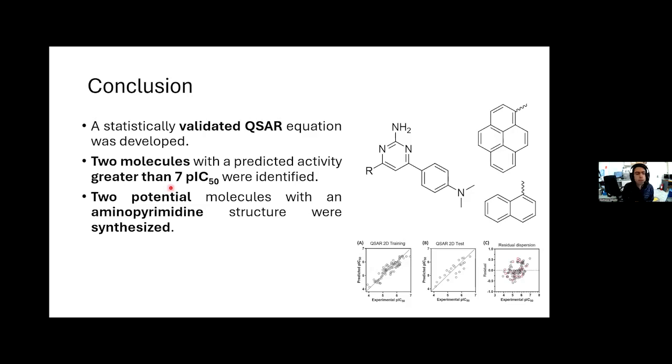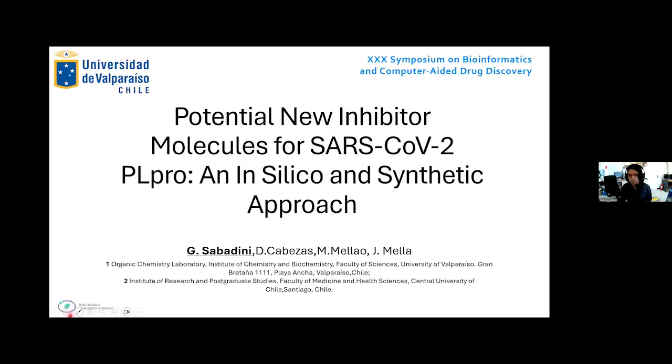Finally, we concluded that we obtained a validated QSAR equation. We obtained two molecules with aminopyrimidine structure that have greater than 7 pIC50 predicted. We synthesized these two molecules with aminopyrimidine structure, and we are looking to synthesize more aminopyrimidine structures. With these two synthesized molecules, we want to test them in a biological assay. Thank you.